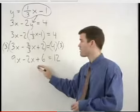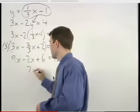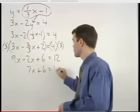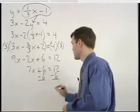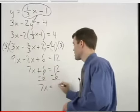Simplifying the left side, we have 7x plus 6 equals 12. Subtract 6 from both sides, and 7x equals 6.